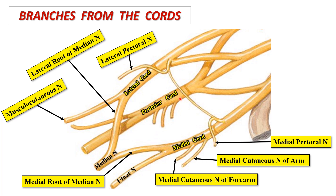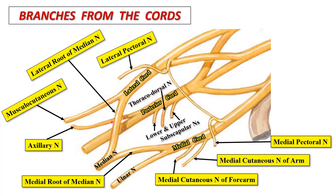Branches from the posterior cord are: the upper and lower subscapular nerves, the thoracodorsal nerve, the axillary nerve, and it continues as the radial nerve. The radial nerve is the thickest of all branches of the brachial plexus.